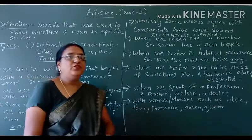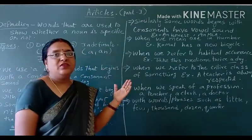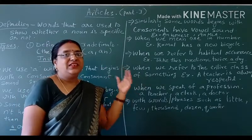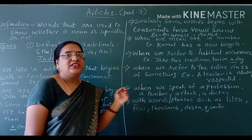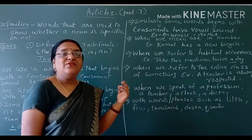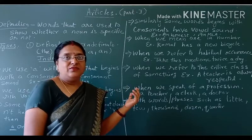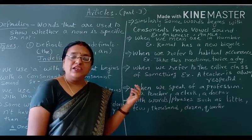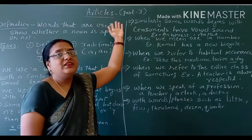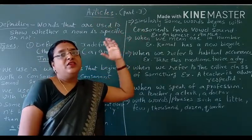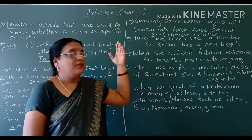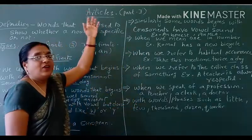Students, do you know which part of speech article belongs? Article belongs to adjectives — it is a part of adjectives. What is the work of adjective? Adjective specifies the noun; it shows the quality of noun. Here also, articles specify the noun or show which type of noun it is.